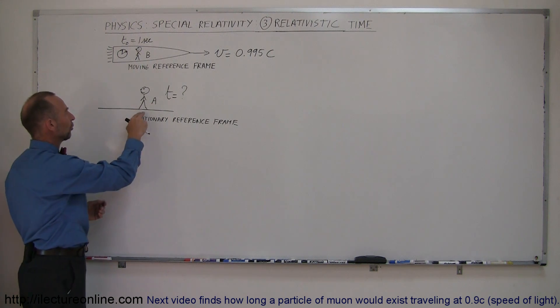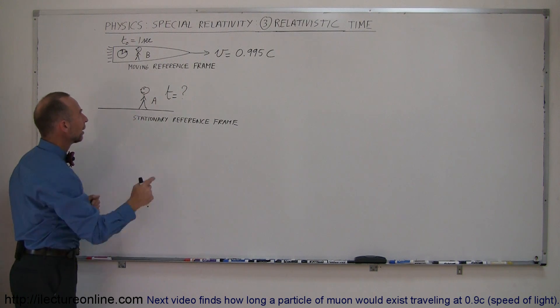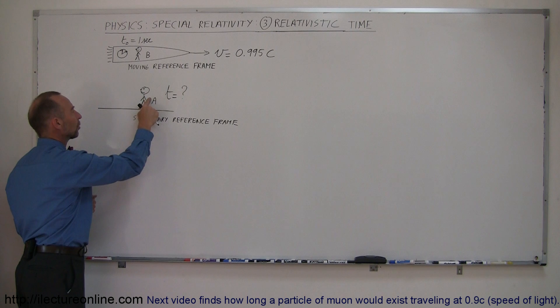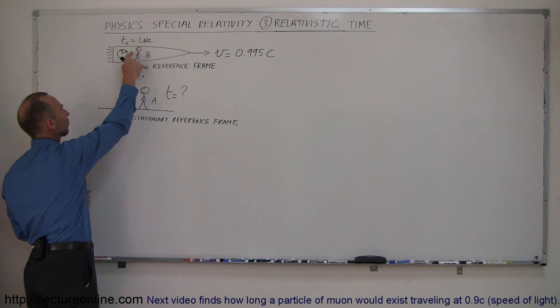We have another observer, Observer A, who's stationary, say on Earth, watching the space rocket go by and looking at the very same clock. How much time has elapsed for this person when only one second has elapsed for Observer B?